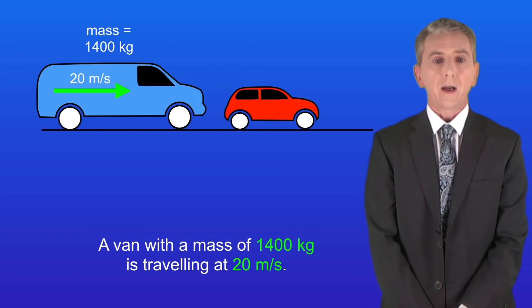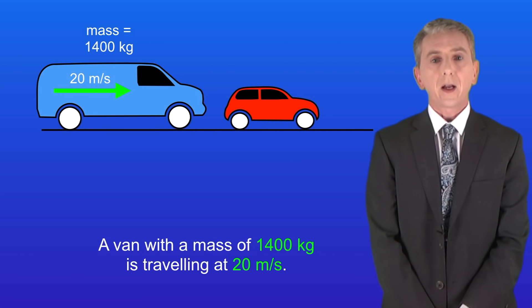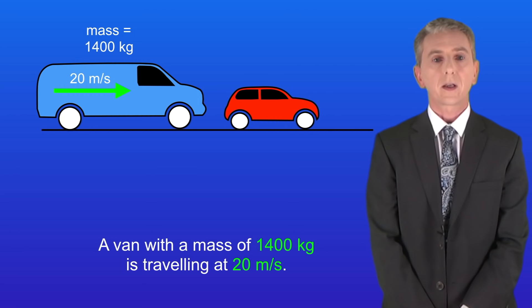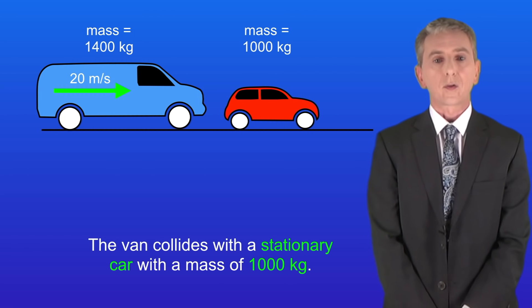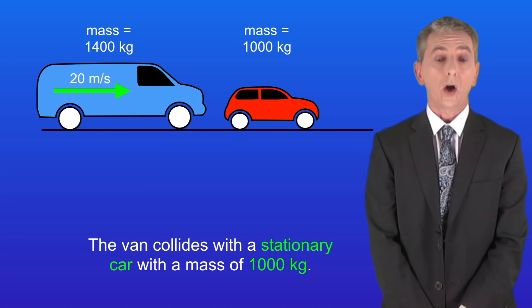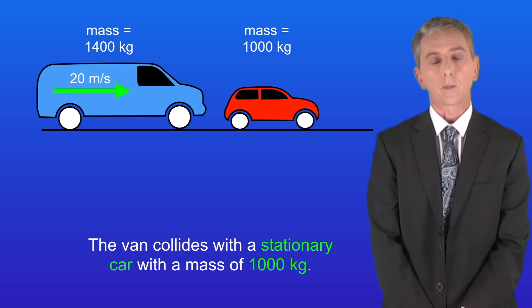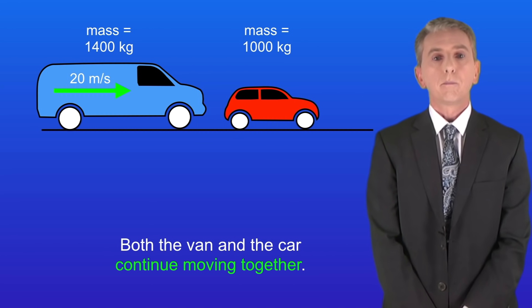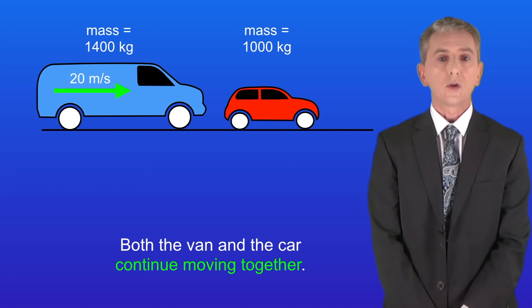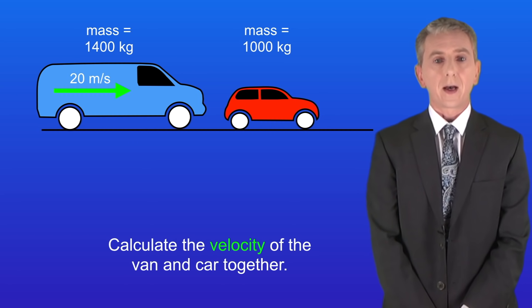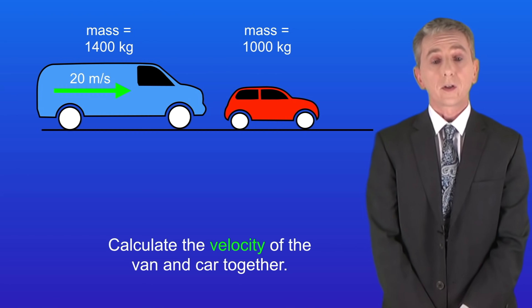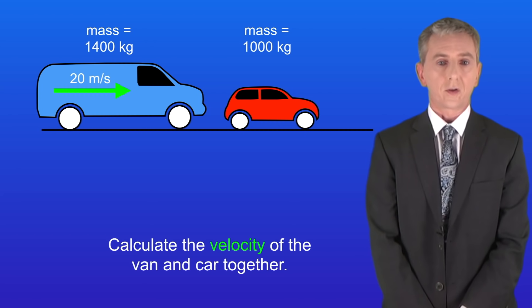Here's a question for you to try. A van with a mass of 1400 kilograms is traveling at 20 meters per second. The van collides with a stationary car with a mass of 1000 kilograms. Both the van and the car continue moving together. Calculate the velocity of the van and the car together. Pause the video now and try this yourself.